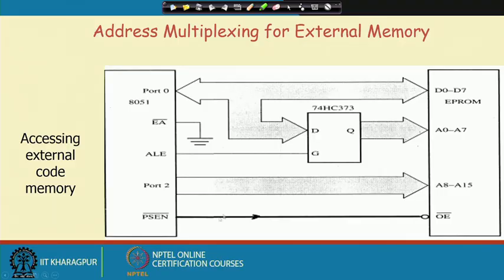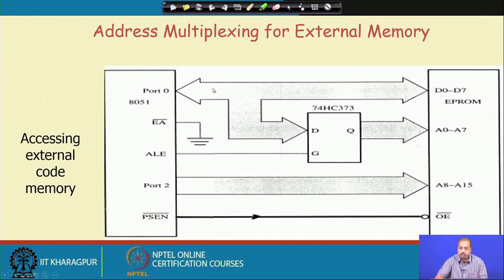As far as address multiplexing is concerned, we have got 8051 connected to one external program memory — an EPROM. Port 2 provides the higher order address bus A8 to A15, and Port 0 is the multiplexed address/data bus. Port 0 is passed through a 74373 latch for demultiplexing the lower order address bus. The ALE signal is connected to the G pin of the 74373, so when ALE is activated the address is available on the bus and gets latched.